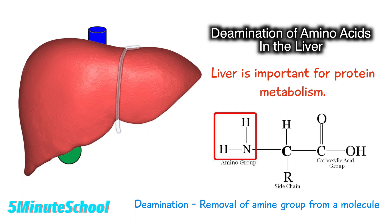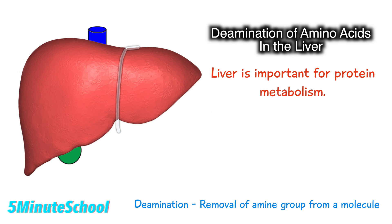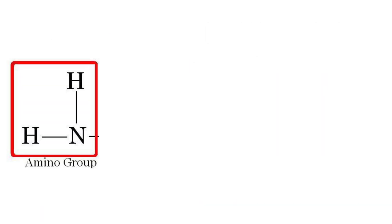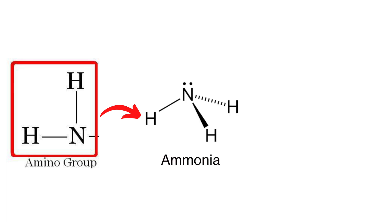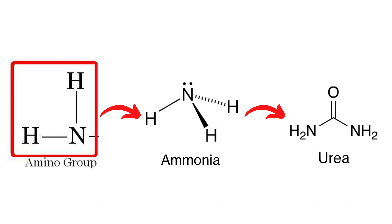Deamination involves the removal of an amine group from a molecule. The reason this happens is because the body can't store proteins or amino acids. One of the functions of the hepatocytes is to deaminate amino acids by removing the amino group, converting it first to ammonia, which is quite toxic, and then the ammonia is converted into urea. Urea is excreted by the kidneys.